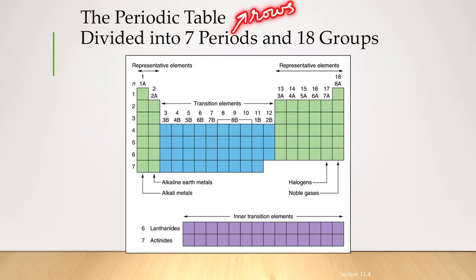The periods are the rows, and the columns are actually called the groups.